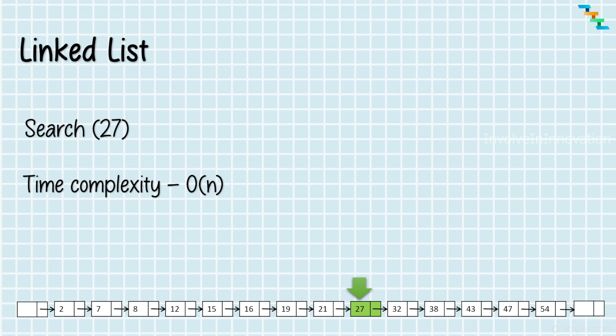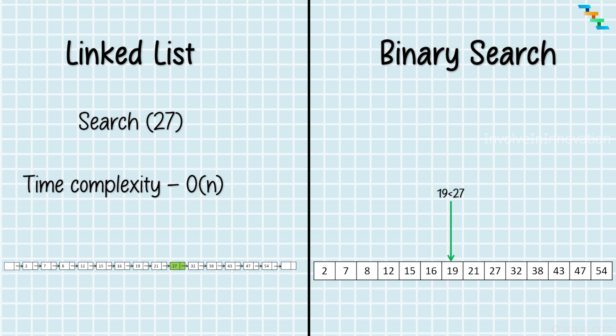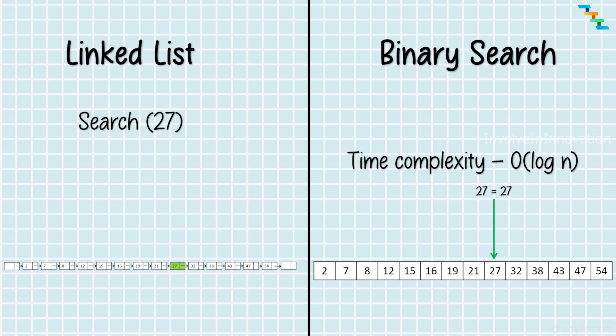If the sorted elements are in an array data structure, we can use binary search. We divide the list in 2 and compare the element to search with the mid. If the element to search is less than the mid value, we continue this divide and conquer in the first half. Otherwise, if the element is greater than the mid value, we continue in the second half. The time complexity of binary search is O(log n).